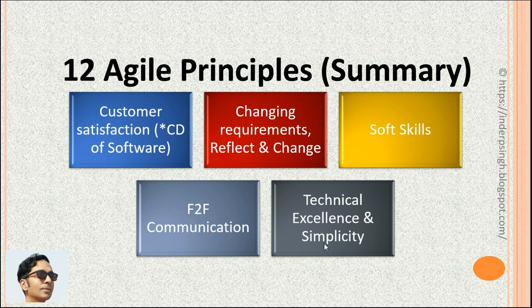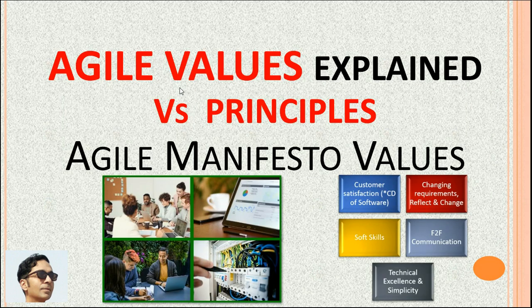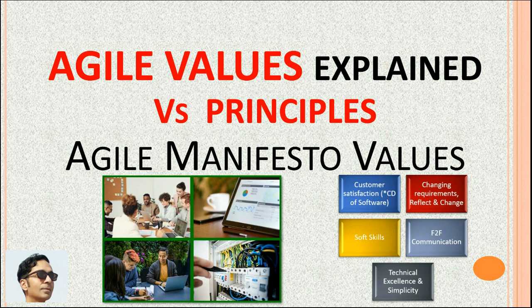In this agile tutorial, I explained the four values of agile with examples: individuals and interactions, working software, customer collaboration, and responding to change. I also explained the agile manifesto 12 principles in summary. I hope that now you know about agile manifesto values and principles with practical examples. Please like this video and subscribe to the Software and Testing Training channel. Many thanks and bye for now.